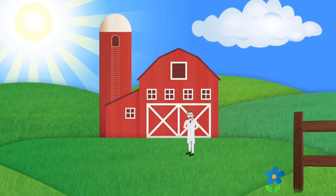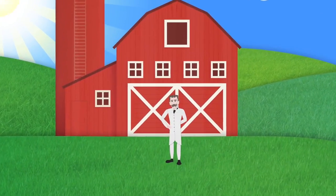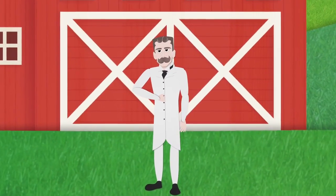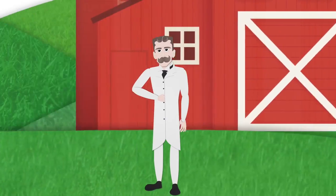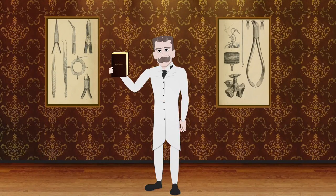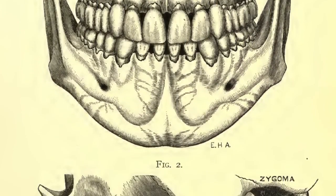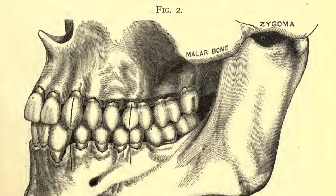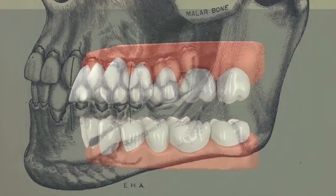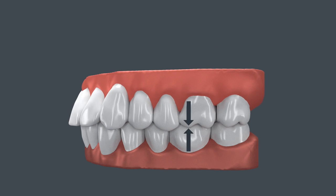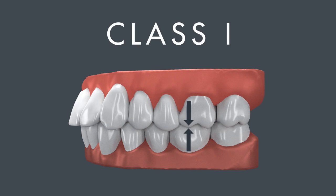Born on a Pennsylvania farm in 1855, Dr. Edward Angle is considered the father of modern orthodontics. He invented ingenious mechanical appliances for moving teeth and created the broad classifications of malocclusion that orthodontists still use today. Dr. Angle believed that the most fundamental characteristic of ideal occlusion was a proper molar relationship. He found that in patients with healthy bites, the mesio-buccal cusp of the first upper molar occludes in the buccal groove of the first lower molar. Dr. Angle called this ideal configuration a Class 1 molar relationship.